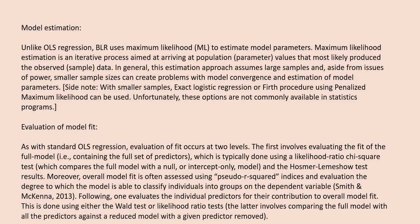Unlike OLS regression, binary logistic regression uses maximum likelihood to estimate model parameters. Maximum likelihood estimation is an iterative process aimed at arriving at population parameter values that most likely produce the observed data. This approach assumes large samples; smaller samples can create problems with model convergence and estimation. With smaller samples, exact logistic regression or the Firth procedure using penalized maximum likelihood can be used, though these options are not commonly available in statistics programs.